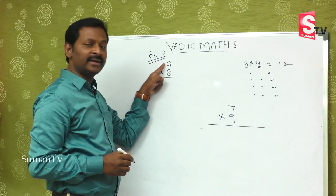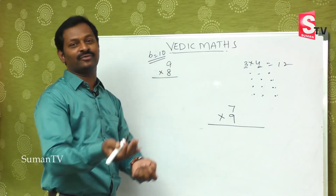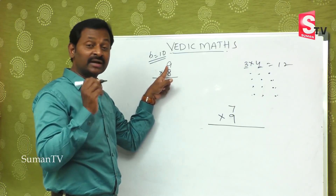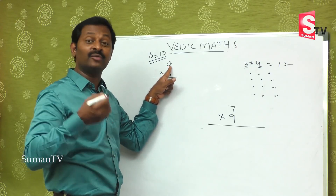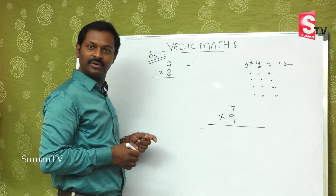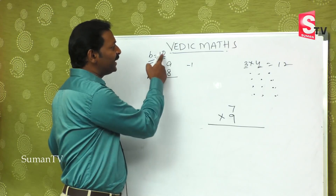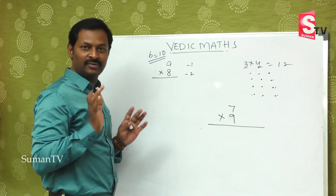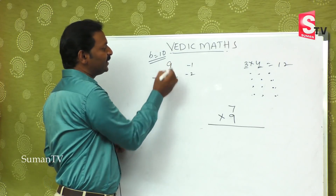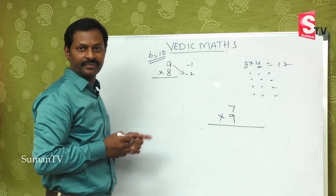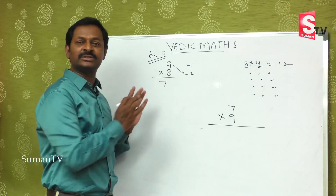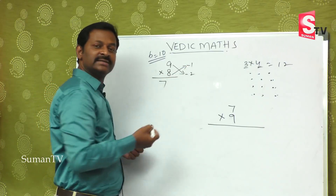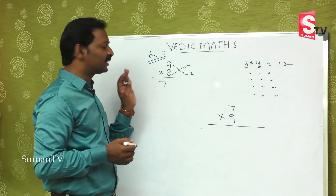If the base number is 10, then: 9 is less than 10, so that is minus 1. And 8 is less than 10 by 2 digits, so that is minus 2. Now, cross-subtract: 9 minus 2 is 7 — that is the first part of the answer. Or equally, 8 minus 1 is 7. You will definitely get the right answer.